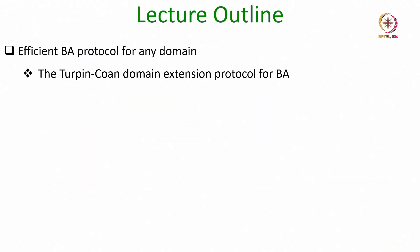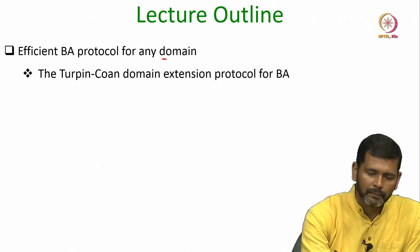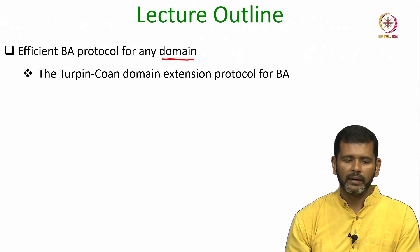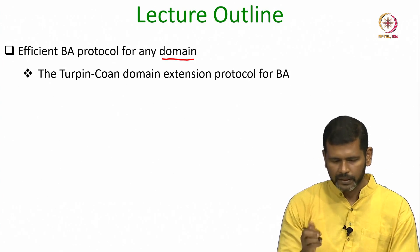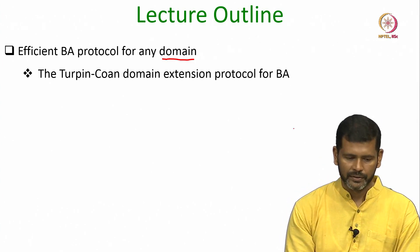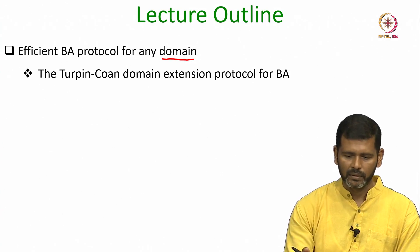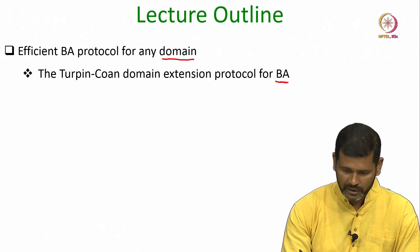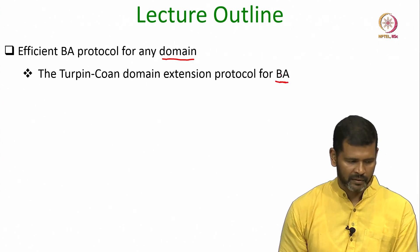Hello everyone, welcome to this lecture. In this lecture we will see a perfectly secure Byzantine agreement protocol for any domain, namely the well-known domain extension protocol for BA due to Turpin and Cone. Even though I will be explaining this domain extension protocol in the context of perfectly secure BA protocol, we will see some variations where this domain extension is applicable in other settings as well.